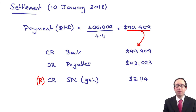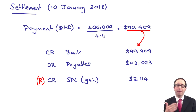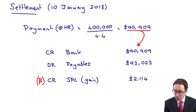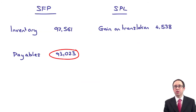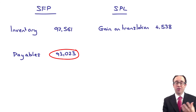This could appear as a multiple choice question in Section A or Section B, likely examined numerically. Numbers could ask you to work out the gain or loss on settlement, or the gain or loss on translation of the monetary item at the reporting date — plenty of scope for multiple choice questions. It could also form a small part of an individual accounts preparation question.